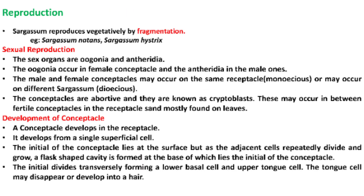Next is reproduction. Sargassum reproduces vegetatively by fragmentation. Examples include Sargassum natans and Sargassum hystrix.